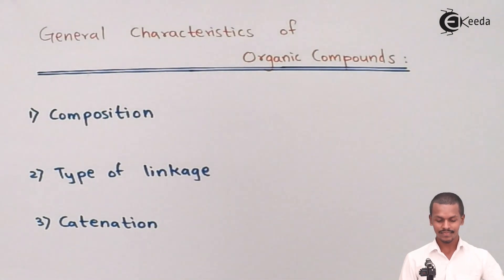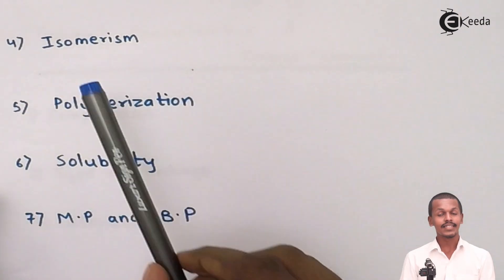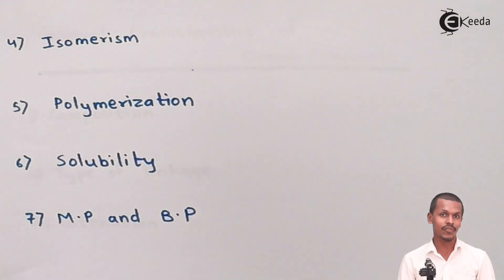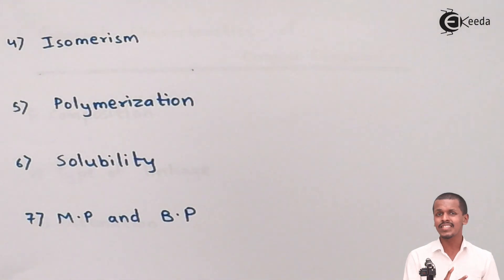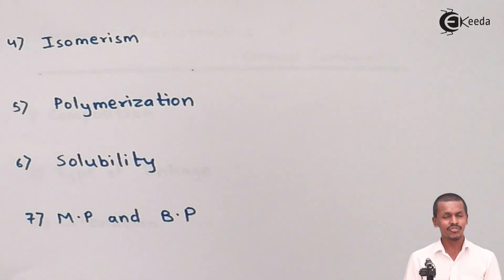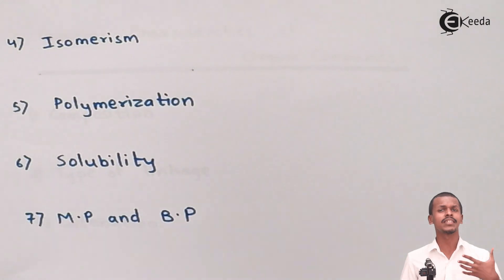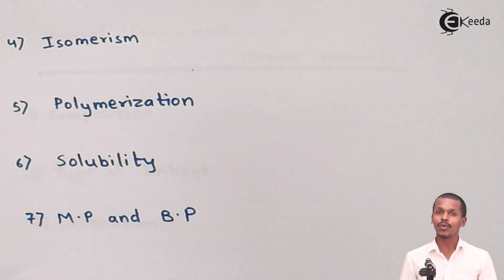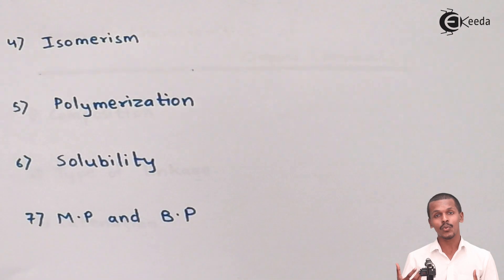Next is Isomerism. To understand isomerism, we should first know what isomers are. Isomers are compounds which have the same molecular formula but different structural formulas, which may also involve different functional groups. Compounds showing isomerism can have straight chains or branched chains — the structure changes, and the functional group may also differ — but the total number of atoms remains the same for both isomers.